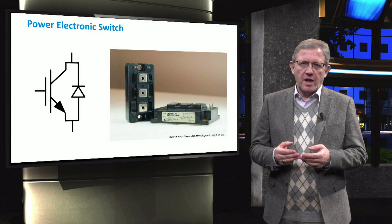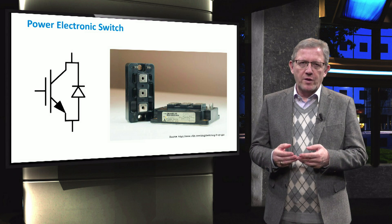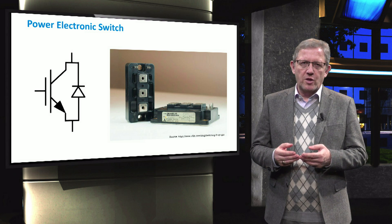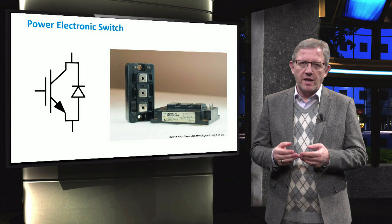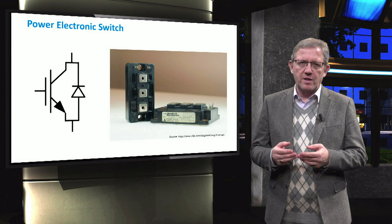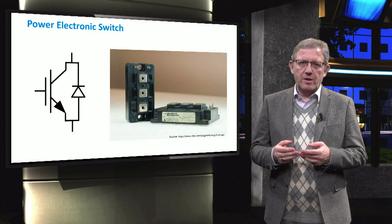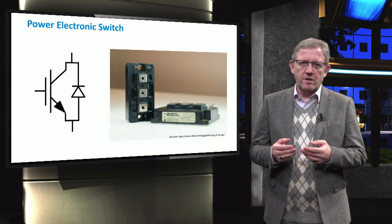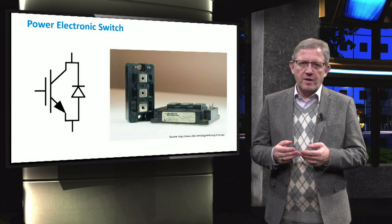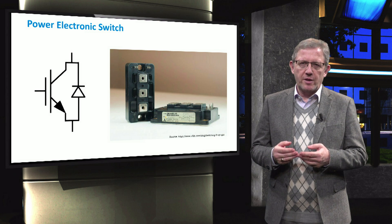We show here the schematic representation and a real photo of a switch. As an example, we show an insulated gate bipolar transistor IGBT switch. These power electronic switches are able to turn on and turn off with the switching frequency from hundreds of Hertz up to hundreds of kilohertz.